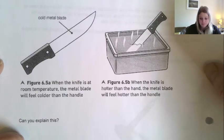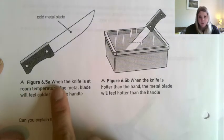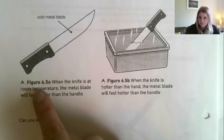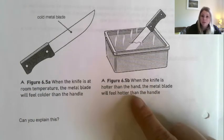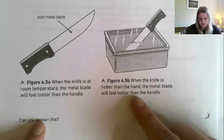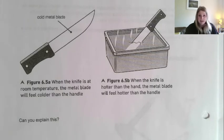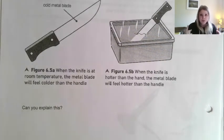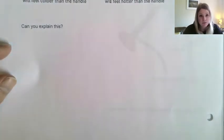If you turn to page 58, we've got a diagram at the top here. It says: when the knife is at room temperature, the metal blade will feel colder than the handle. However, when the knife is hotter than the hand, the metal blade will feel hotter than the handle. Can we explain this? It's all down to the fact that metal is a good conductor of heat, so heat energy transfers quicker. It's also down to the fact that heat energy always travels from hotter areas to colder areas.